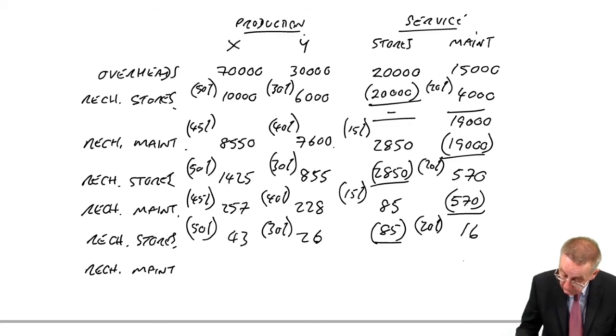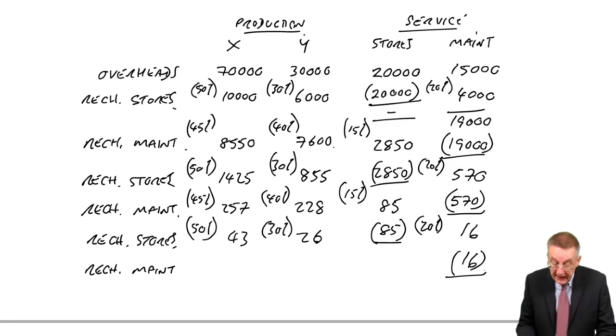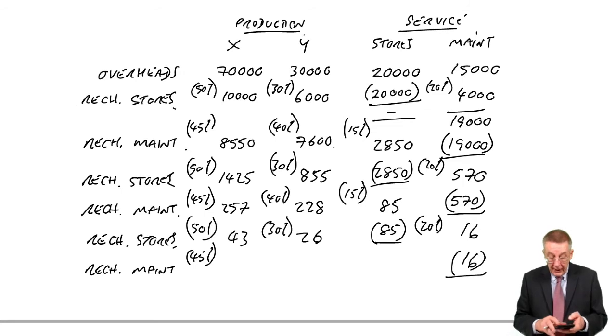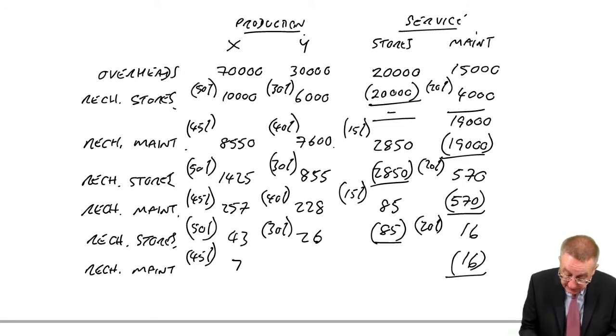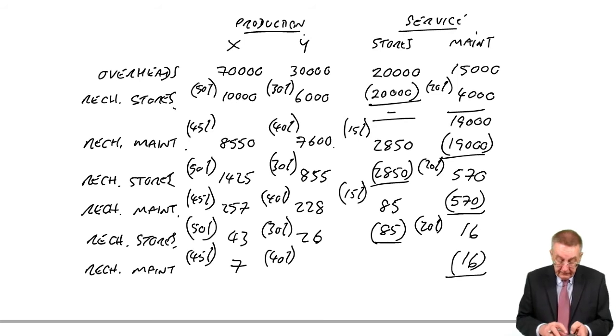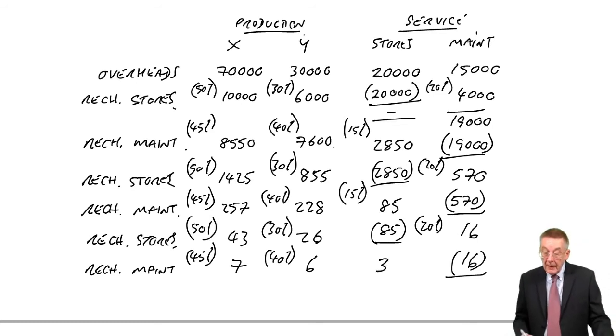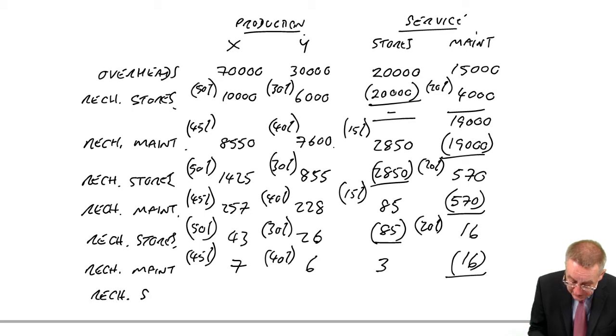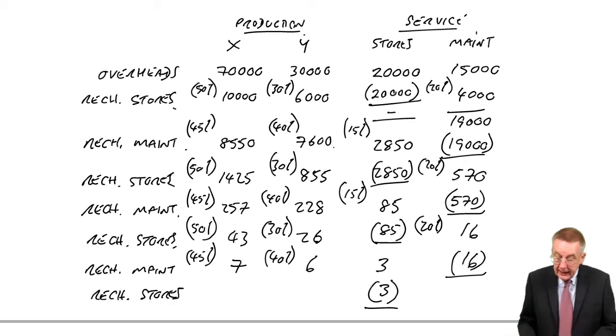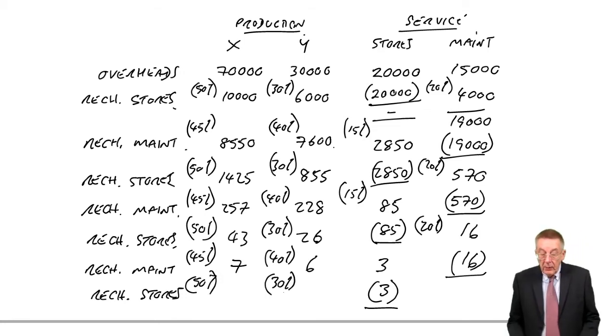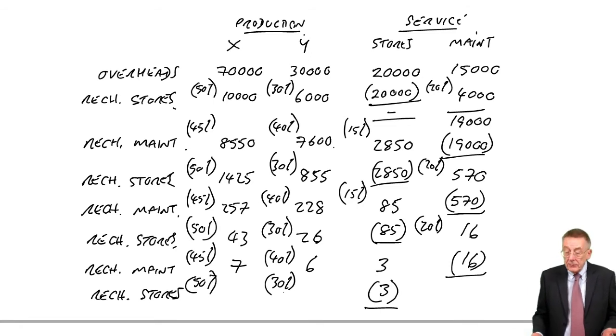Now we've got to recharge that 85. So recharge stores. 50% to X is 43, 30% to Y is 26, and the rest 20% is 16 to maintenance. Recharge maintenance. 45% to X is 7, 40% to Y is 6, so the remaining 3 goes to stores.